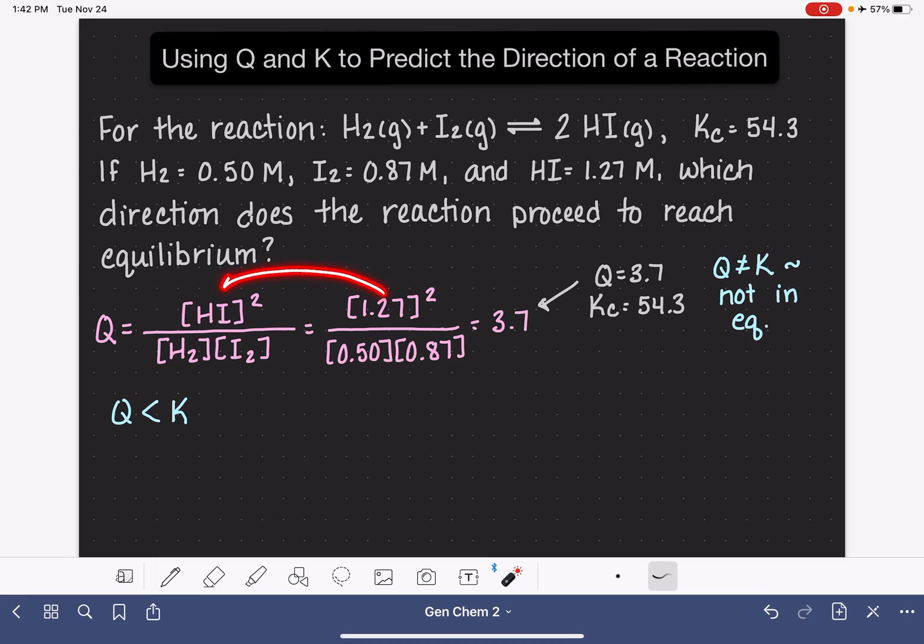Our numerator is, in this case, HI. No matter what, our numerator is always corresponding to our product. So if Q is too small, this just simply means that our system, our reaction, needs more products.